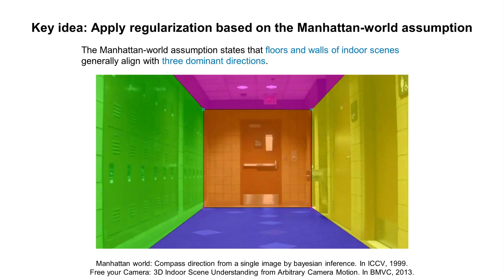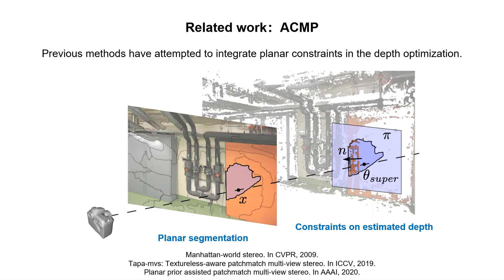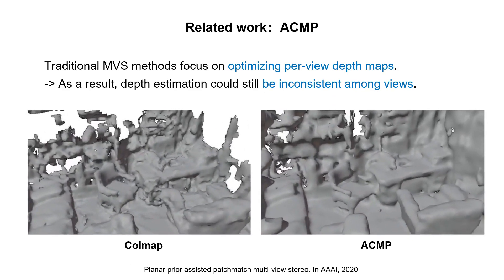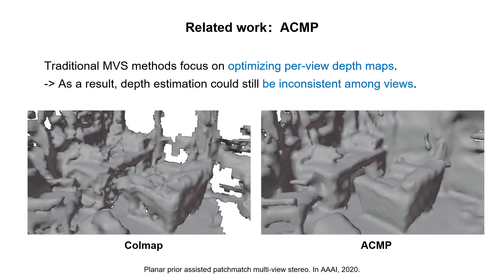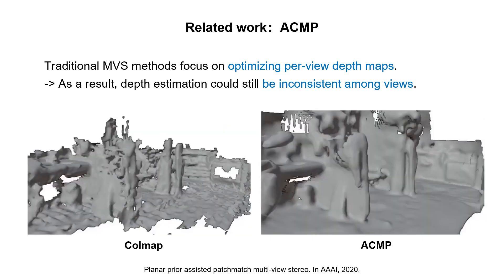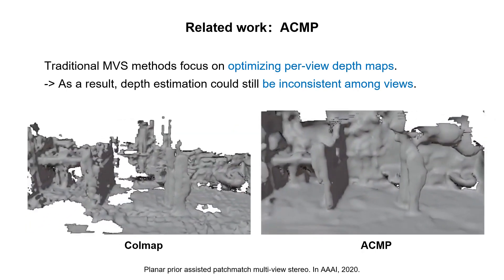Our key idea is to apply regularization based on the Manhattan World Assumption, which states that floors and walls of indoor scenes generally align with three dominant directions. Previous multiview stereo methods have attempted to integrate planar constraints in depth optimization — they first find planar regions in the scene, then construct an objective function requiring estimated depth to satisfy geometric constraints in these regions. However, these methods focus on optimizing per-view depth maps instead of a unified model in 3D space. As a result, depth estimation can still be inconsistent among views, yielding suboptimal reconstruction quality.